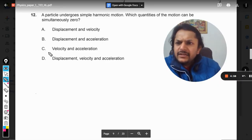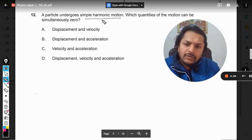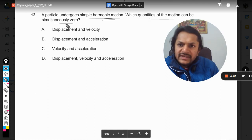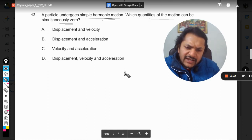Okay students, let's see this question: a particle undergoes simple harmonic motion - which quantities of the motion can be simultaneously zero? I would say this is comparatively an easier question in this examination; otherwise all the questions have been very difficult.